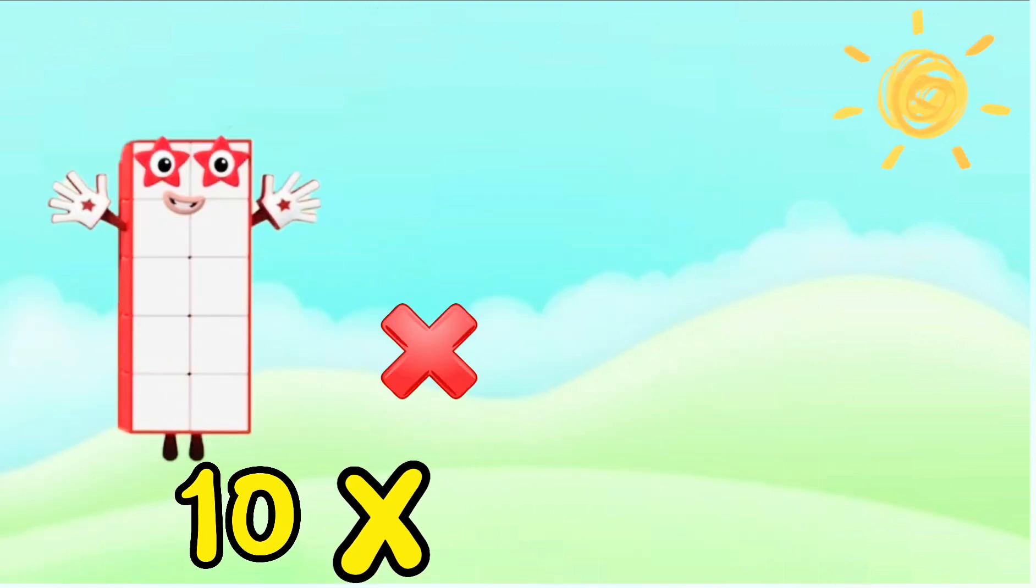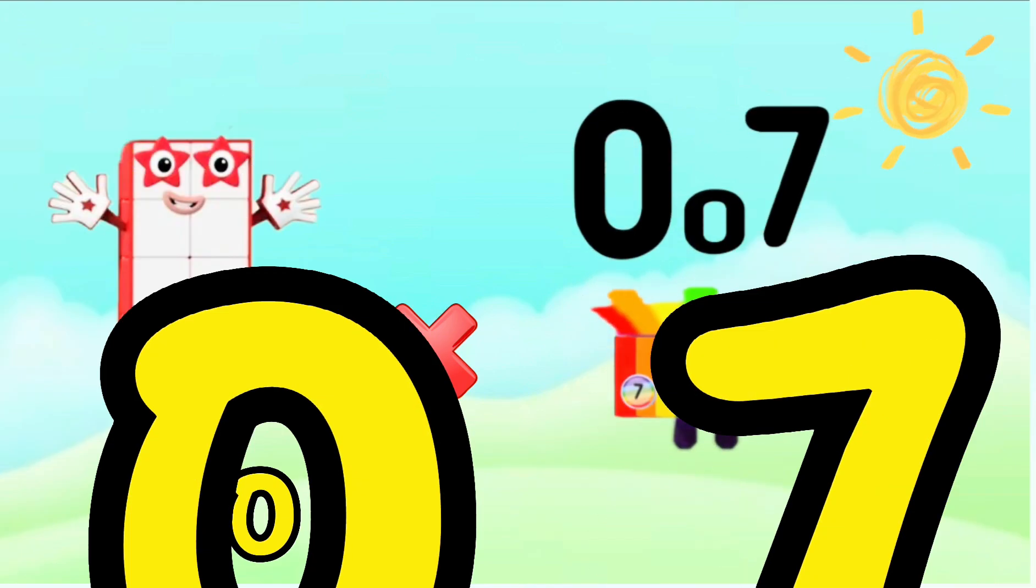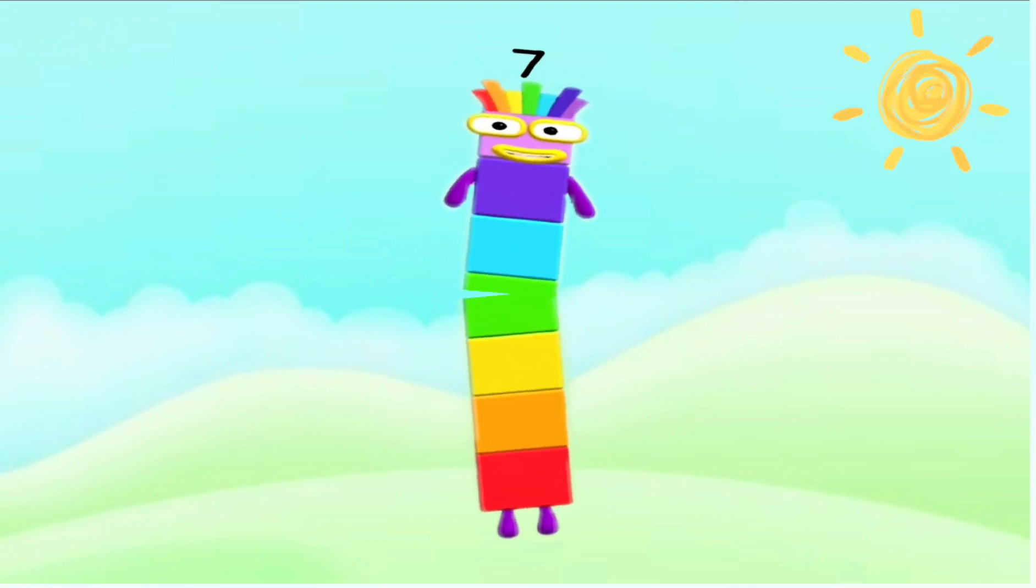And lastly, 10 multiplied by 0.7 equals 7.